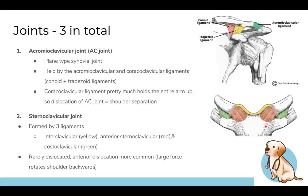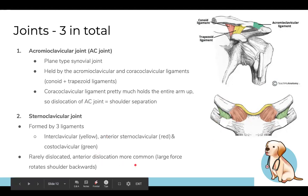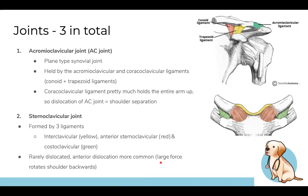The sternoclavicular joint connects the clavicle to the sternum and is formed by three ligaments: the interclavicular ligament (between the clavicles, in yellow), the anterior sternoclavicular ligament (in front), and the costoclavicular ligament (green, between the clavicle and first rib). This joint is quite sturdy due to the short ligaments, making dislocation rare — though anterior dislocation can occur with a large force rotating the shoulder backwards.